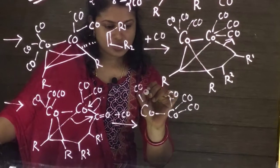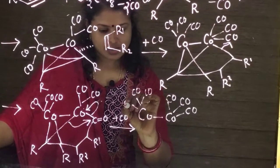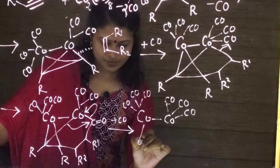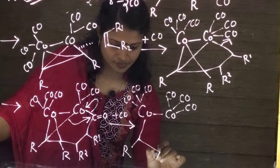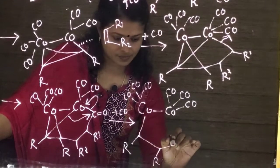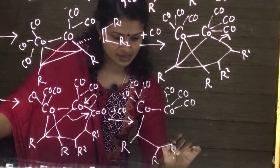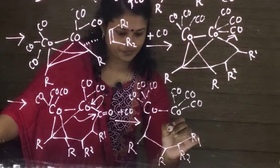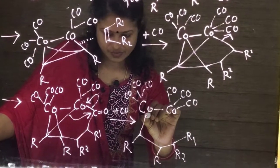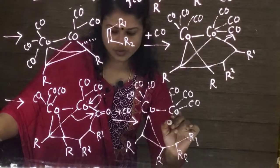Here it is same, all the three carbon monoxide are, it is R2, this one R1. Here there is a bond.